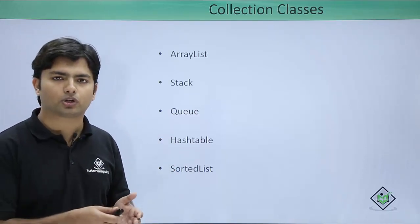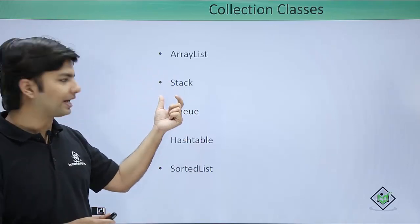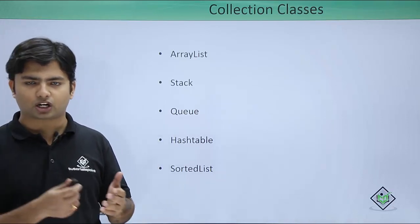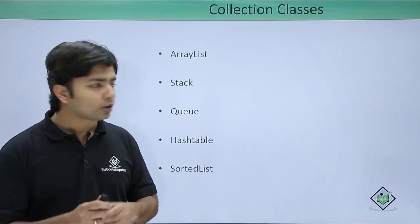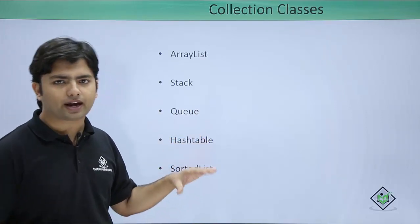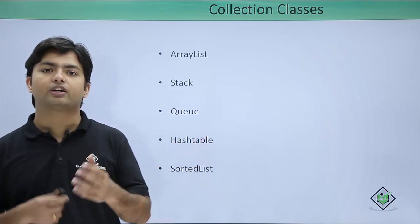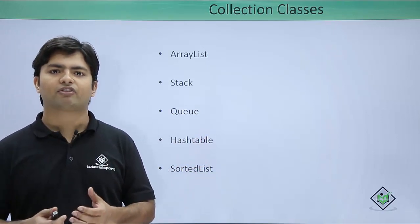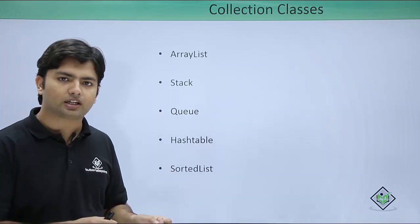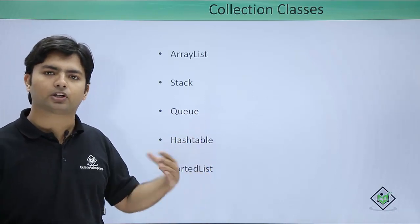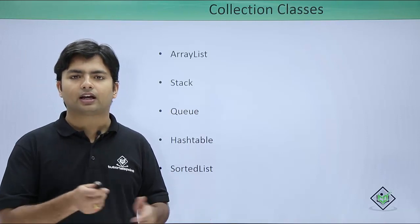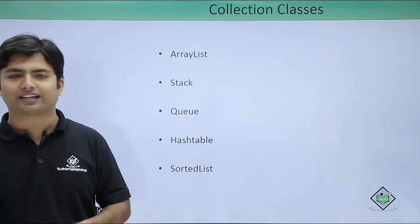In ArrayList you get something like an array and you can remove elements from any location. Stack and Queue are famous data structures — last in first out and first in first out respectively. HashTable and SortedList take care of paired values with a key and value, where each value has a unique key for searching and removal.